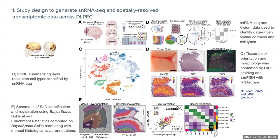Panel D also presents single-molecule fluorescence in situ hybridization to look at the main targets including neurons, white matter, and gray matter using different colors. Spots at the bottom confirm the presence of different brain regions: SNAP25 as a neuronal marker, MBP to mark white matter at the two extremes, and PCP4 as a marker for specific regions of gray matter, confirming the presence of layers one through six including white matter.